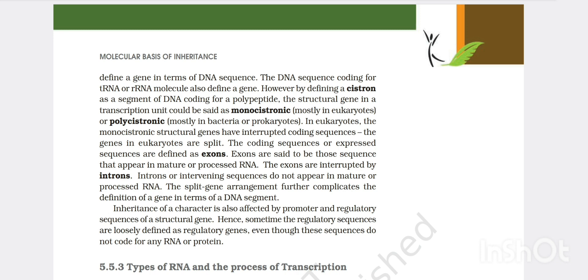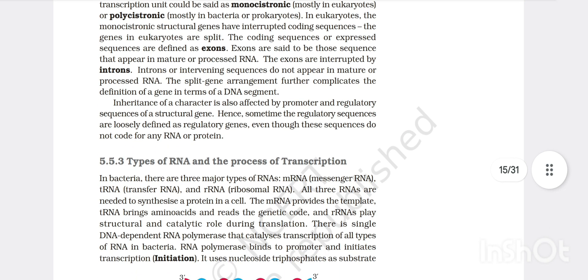However by defining a cistron as segment of DNA coding for polypeptide, the structural gene in a transcription unit could be said as monocistronic mostly in eukaryotes. In eukaryotes it is monocistronic or polycistronic in case of prokaryotes and bacteria. In eukaryotes the monocistronic structural genes have interrupted coding sequences. The genes in eukaryotes are split. The coding sequences or expressed sequences are defined as exons. Exons are said to be those sequences that appear in mature and processed RNA. The exons are interrupted by introns. These are exons which are present in eukaryotic DNA and these are introns. These exons are coding sequences while introns are non-coding sequences.